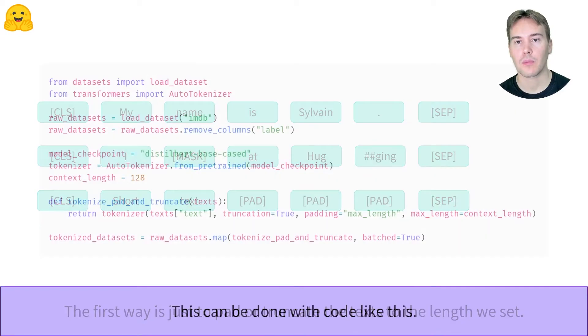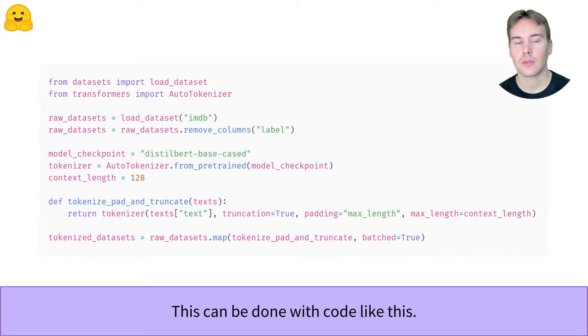As we have seen when we pre-process the data for text classification, this is all done by our tokenizer with the right options for padding and truncation.